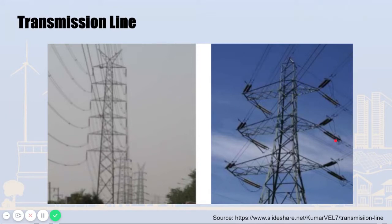In the case of suspension types, there is only vertical weight on one arm of the tower. In the case of tension type, there are vertical weights and pulling tension on both sides. Considering these weights, towers should be designed accordingly.